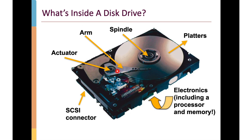The read-write head is on an arm that moves back and forth across the disk surface in a radial direction. As the disk rotates and the head moves back and forth, you can access any position on the disk surface by moving the head to the appropriate location and waiting for the disk to rotate so that the desired element is under the head. The arm is controlled by an actuator — a stepping motor that activates very quickly to move the read-write head. There's also considerable electronics, typically on a circuit board on the bottom of the drive, including its own processor, memory, and read-only memory to allow initialization when power is applied.